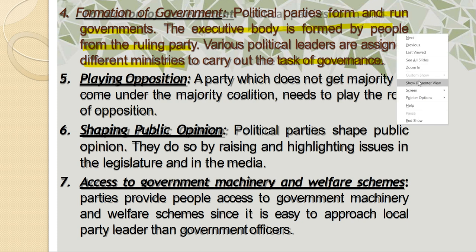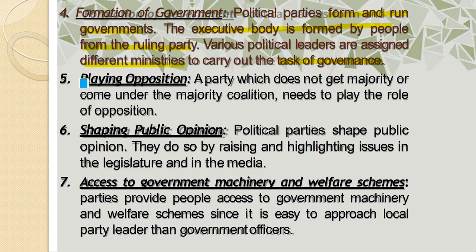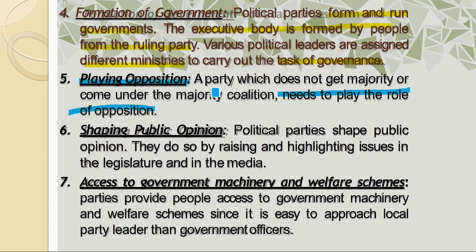If a party does not get majority, it plays the role of the opposition party. As much as a ruling party is required, the opposition party is also required in an active democracy. The opposition plays the role of the watchdog — if it is strong, it can condemn, criticize, and support the government. So we need to have a strong opposition as well.